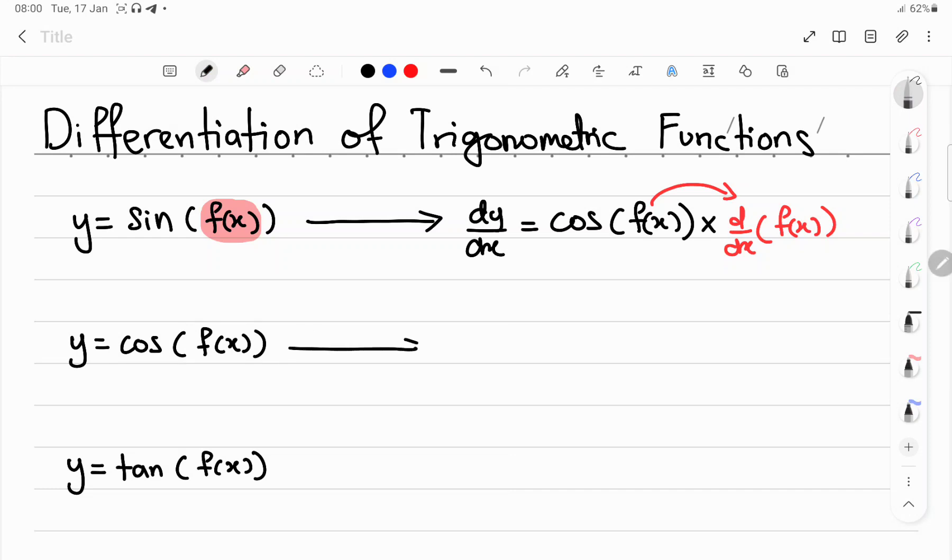Okay, second one, cosine fx. So the dy/dx, the differentiation of it, is negative sine fx. And then the next step is differentiate the bracket.